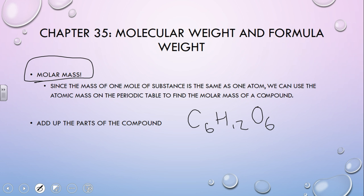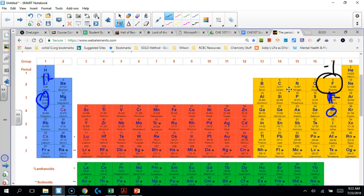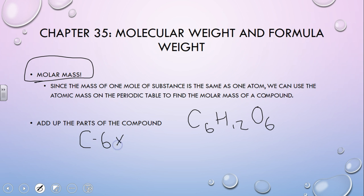Here's what we're going to do. We're going to take how many of each there are. So for carbon, there's six, and then I'm going to look at the periodic table. You'll see on the periodic table that carbon has a mass of 12.011.